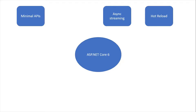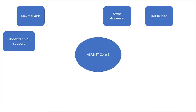The next big feature in ASP.NET Core 6 is Minimal APIs. This allows you to develop web APIs very quickly with just a few lines of C# code and very few dependencies. These are stateless REST-based APIs, and because they require so little code, they are called Minimal APIs. The next feature is Bootstrap 5.1 support, which makes your applications more responsive.